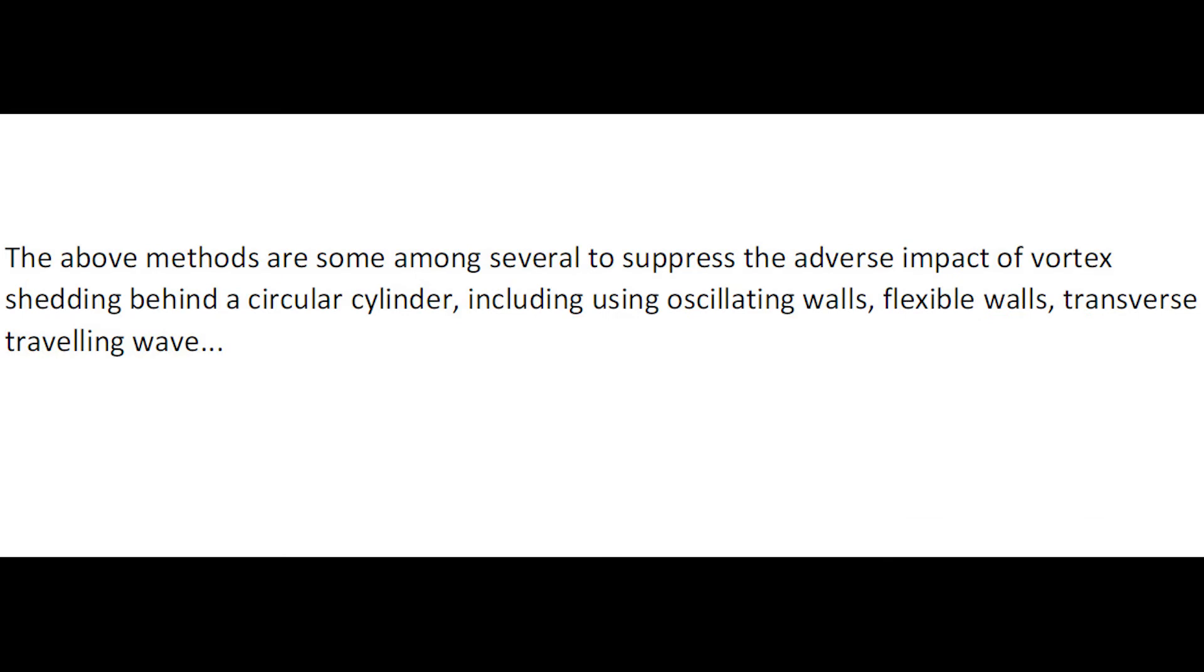The above methods are some among several to suppress the adverse impact of vortex shedding behind a circular cylinder, including using oscillating walls, flexible walls, and transverse traveling waves.